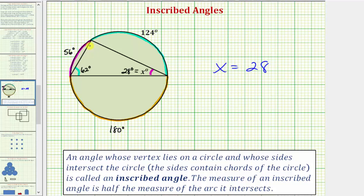And then finally this angle intersects the arc measuring 180 degrees. And therefore this angle measures half of 180 degrees or 90 degrees, which means this angle is a right angle. I hope you found this helpful.